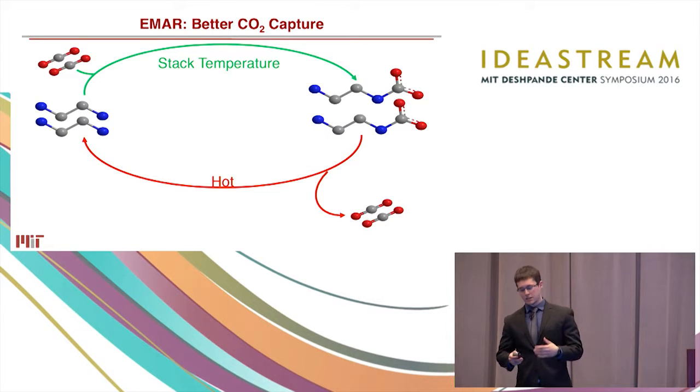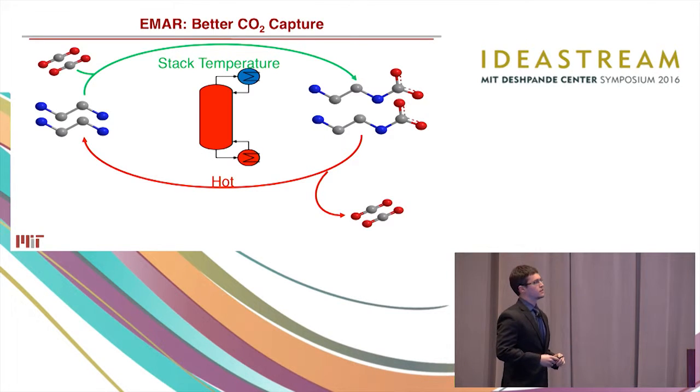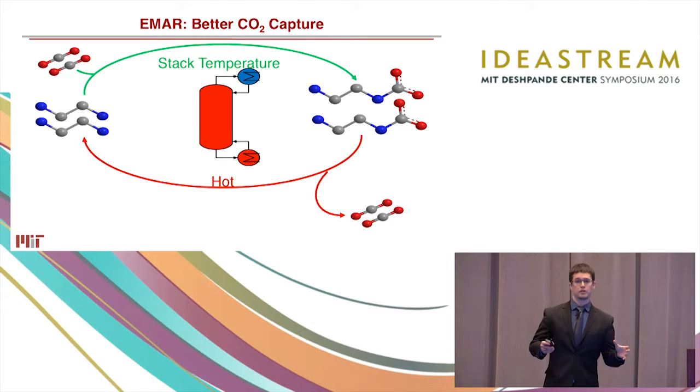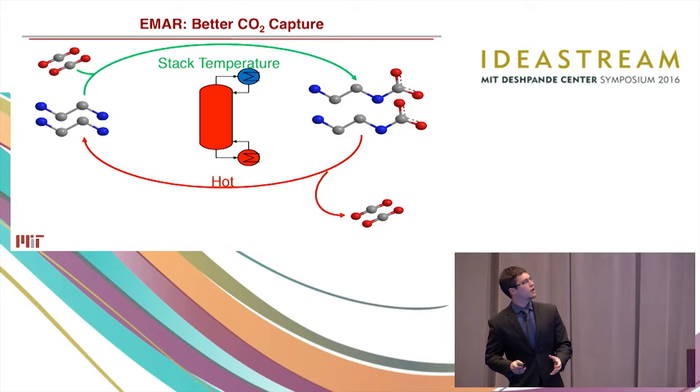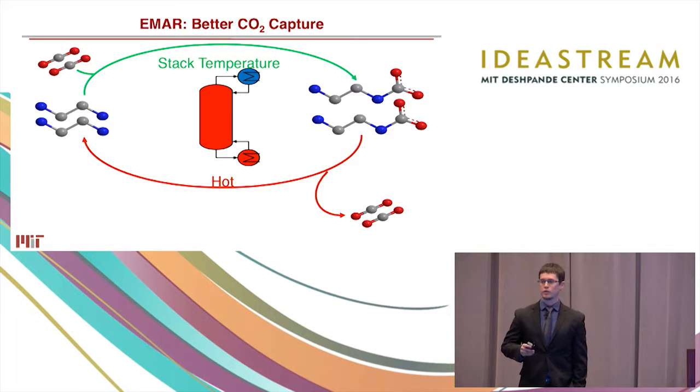Then comes the tough step and that's the desorption. Basically you heat up this CO2 bound amine, it drops its CO2, you get a pure CO2 stream, and recover your amines to capture more CO2. Now this is inefficient and expensive, and in the Hatton group we think we have a better way.